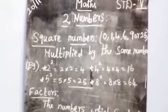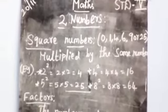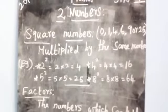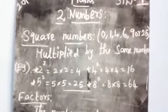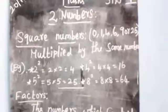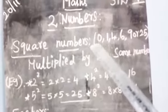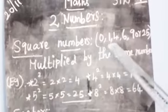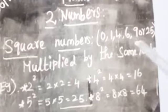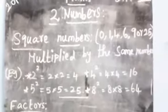A square number — the definition is: a number multiplied by the same number. The square numbers end with the digits zero, one, four, six, nine, or five — those are the endings of square numbers.